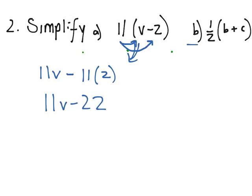Moving on to B, we do the same thing. We multiply half times B. So we've got B over 2. And then we add that to half times C. So that will be C over 2. And this looks good.